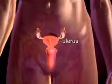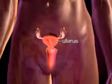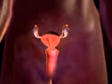The uterus is a hollow, pear-shaped organ of the female reproductive system, sometimes referred to as the womb. It is the organ that houses and protects the developing fetus during pregnancy.